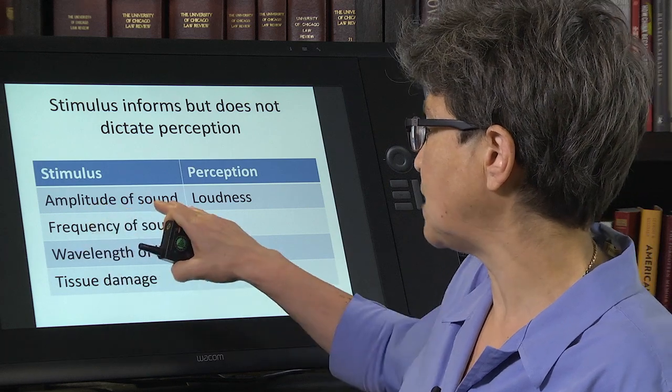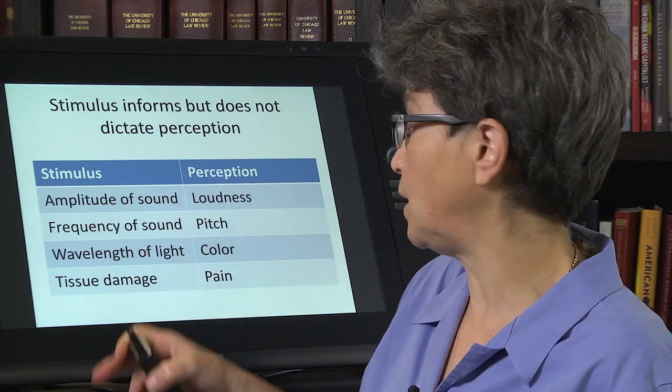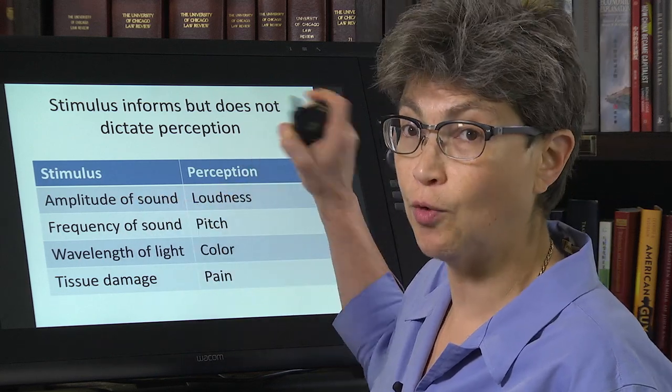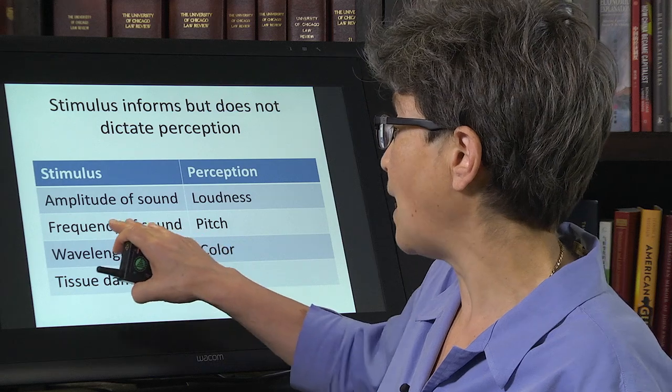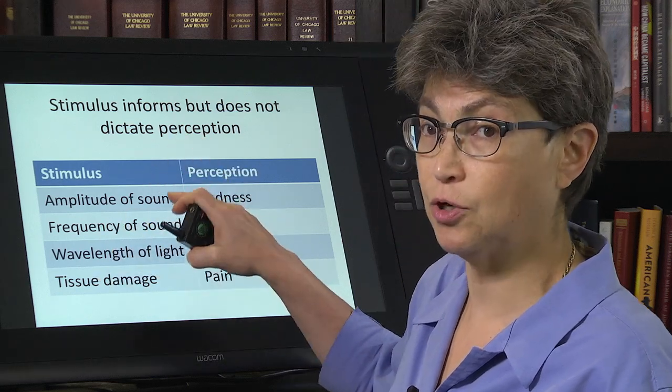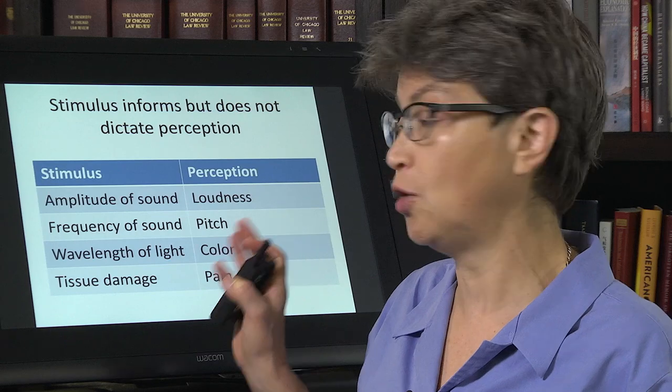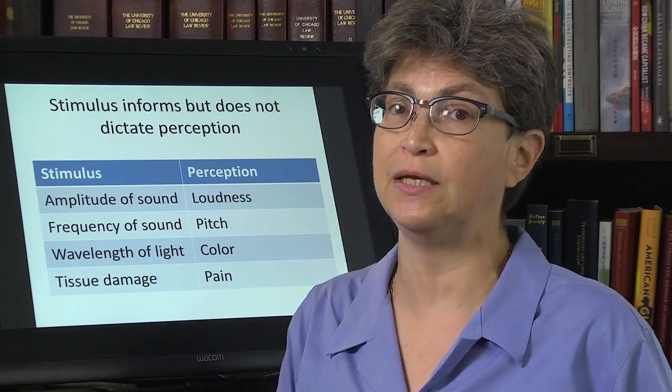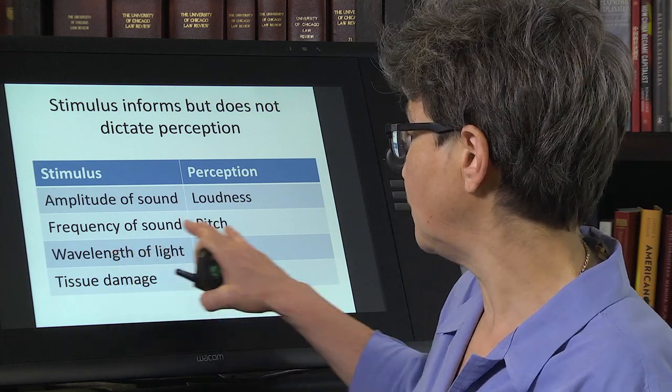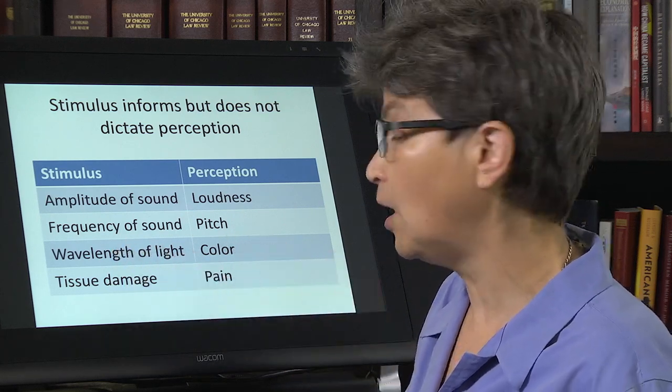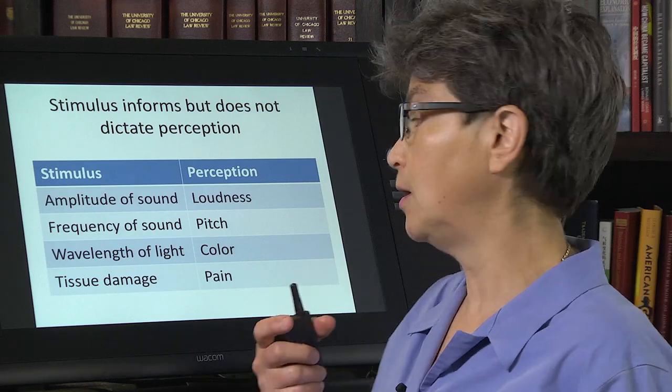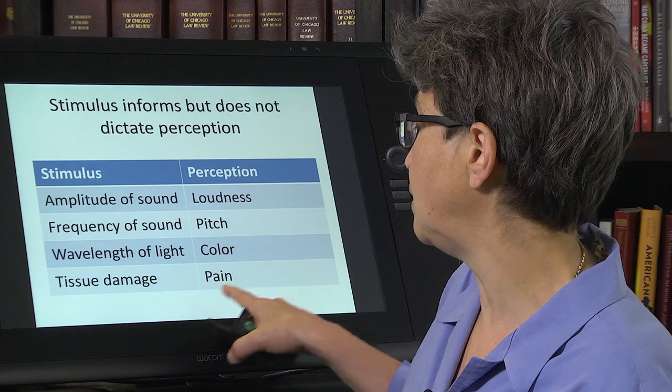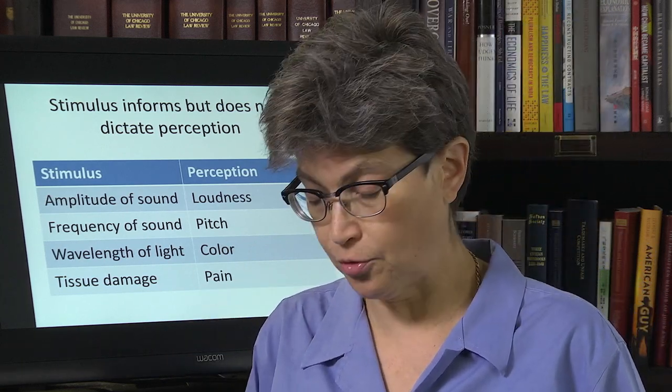The amplitude of the sound is just to give you another few examples. Amplitude of sound is related to loudness. And in general, these two will go up together. Just as the frequency of a sound goes up, the pitch, the perceived pitch will tend to go up. But it's not the only thing that is going to dictate what you hear. The wavelength of light influences the color that you perceive. It is not the only influence upon that perception. And tissue damage can influence whether you feel pain or not.